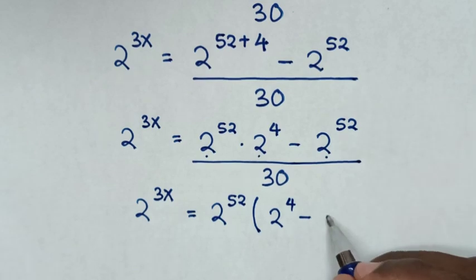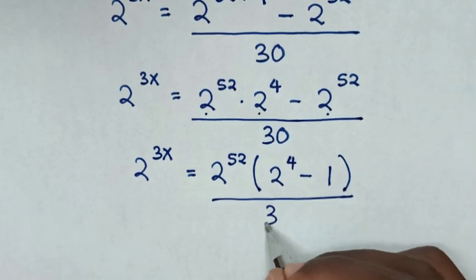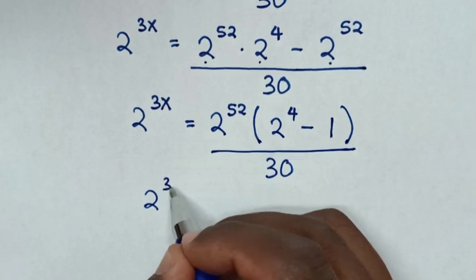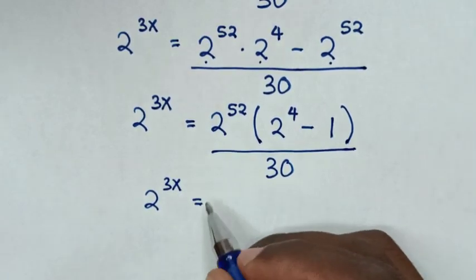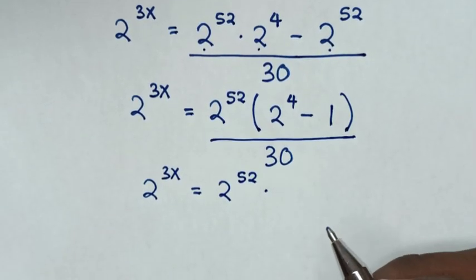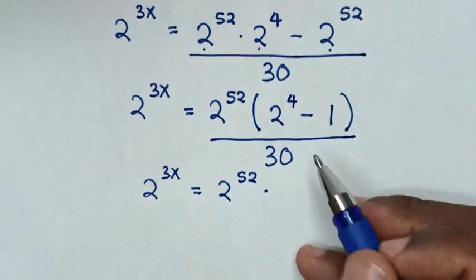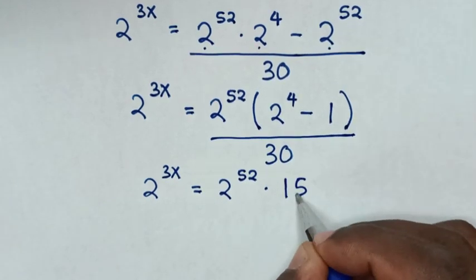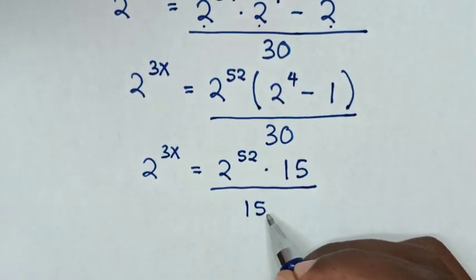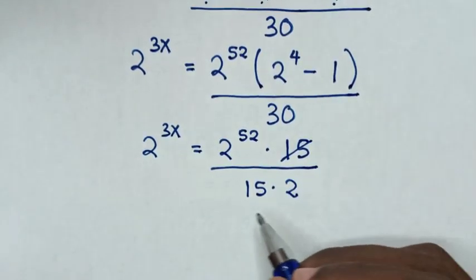Then in the next step, it will be 2 power of 3x is equal to 2 power of 52, then times 2 power of 4, which is the same as 16. So 16 minus 1 is 15, then over 30, which is the same as 15 times 2. In the next step, to simplify, this 15 will cancel with this 15.